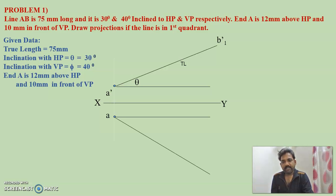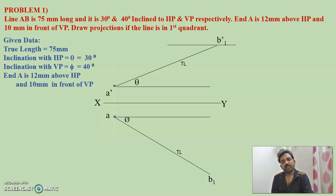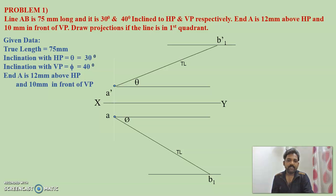From point a draw a line inclined at 40 degrees — the inclination with VP — equal to the true length of 75 millimeters, and mark the end point as b1. Draw the locus of point b in the front view and the locus of point b in the top view. We have now marked all the data: position of point A, true length, true inclination theta, and phi.